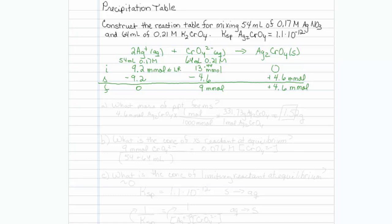The first question we're asked after the table is, what mass of precipitate forms? That's easy enough. We can take our 4.6 millimoles of silver chromate, and we know that there are 1000 millimoles in one mole. And as far as molar mass goes, the molar mass of silver chromate is 331.73 grams of silver chromate per one mole of silver chromate. So multiplying all that out, I get 1.52 grams, which is only good to 2 sig figs, so I will input 1.5 grams.